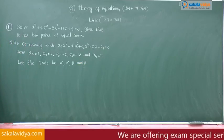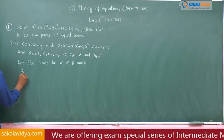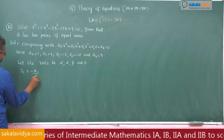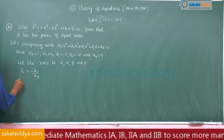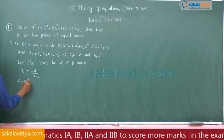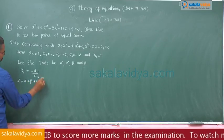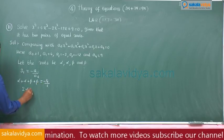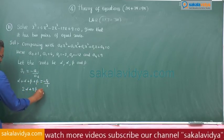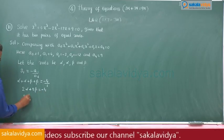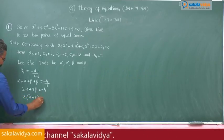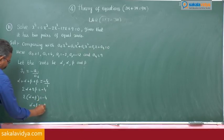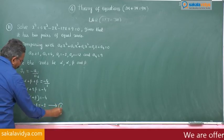Now S1: alpha plus alpha plus beta plus beta equals minus a1 by a0, which is minus 4 by 1. So 2alpha plus 2beta equals minus 4, meaning alpha plus beta equals minus 2. Call this equation 1.